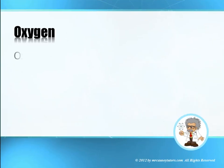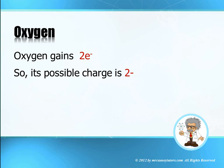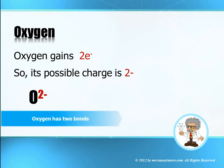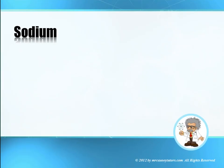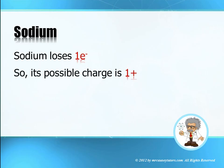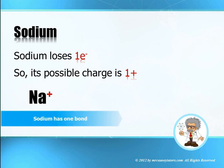Oxygen: we know that oxygen gains two electrons, as we already covered earlier in this lesson. Therefore, oxygen's possible charge is two negative, and we would write its anion as such. Also, once you know the charge, you know how many bonds the element is usually going to make. Sodium loses an electron, therefore its possible charge is plus one — and there's its cation. Sodium has one bond.